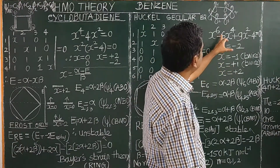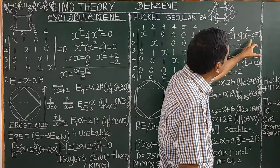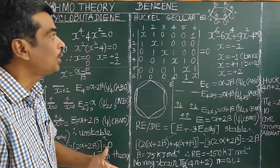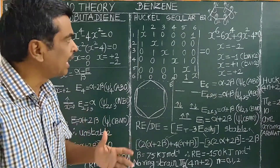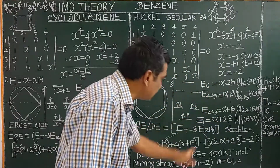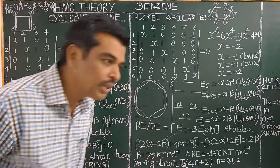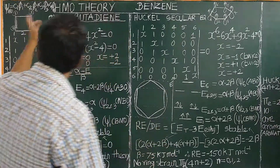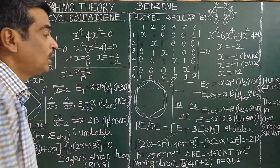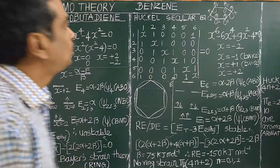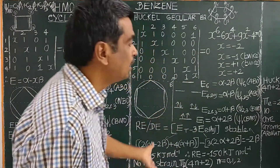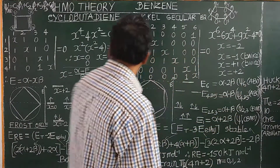On expanding the 6×6 determinant, we get: x⁶ − 6x⁴ + 9x² − 4 = 0. This equation can be solved using pen and paper, or you can write a simple computer program in C or any language to calculate the energy values, the resonance energy, and the atomic orbital coefficients C1, C2, C3, C4. From the coefficients for each value of x, the molecular orbital wave functions are constructed. There are six wave functions for benzene.